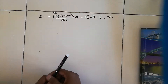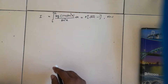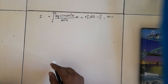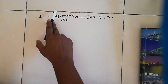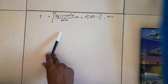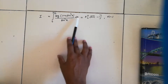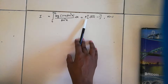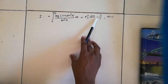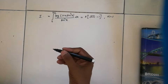Welcome back ladies and gentlemen. This is part 2 of differentiation under the integral sign, and here I am solving a second example: I equals the integral from 0 to pi/2 of log(1 + a·sin²x) / sin²x dx. The answer comes out as pi times (sqrt(a+1) - 1), where a is greater than minus 1.